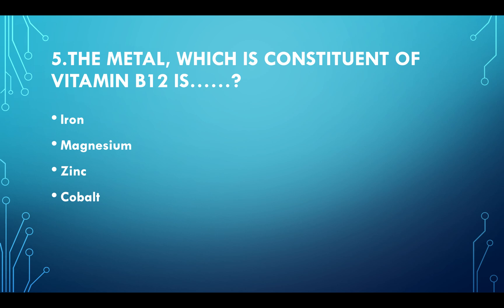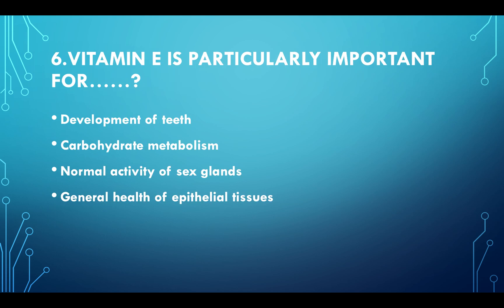The metal which is a constituent of Vitamin B12 is: Option A: Iron. Option B: Magnesium. Option C: Zinc. Option D: Cobalt. Answer: Option D, Cobalt.